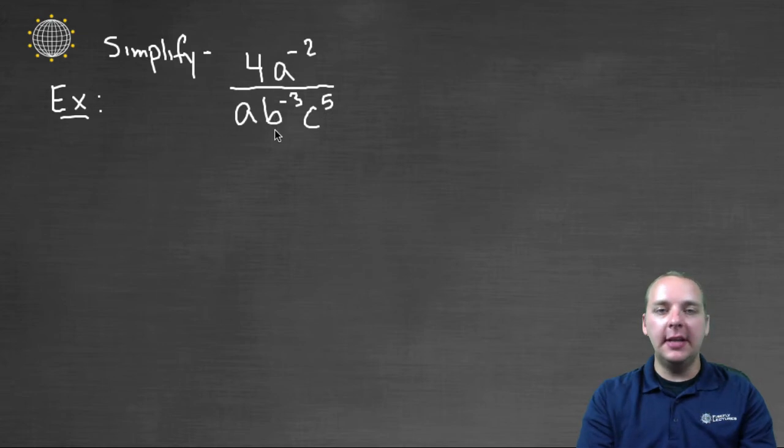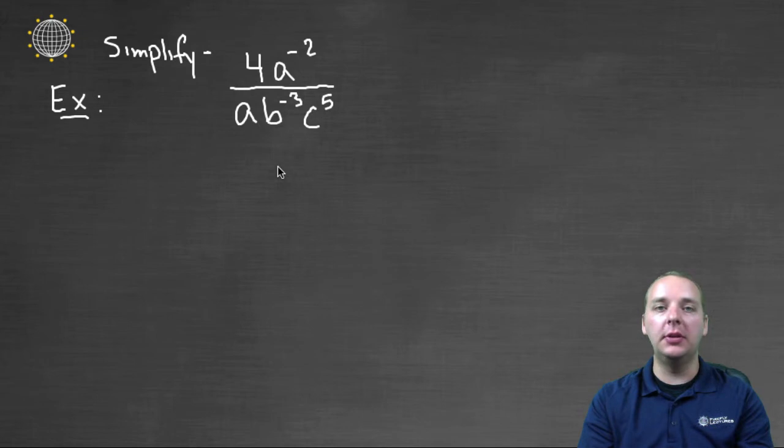Okay, so let's see how we do. Let's try an example here. The most common thing you'll be asked to do with exponents, and especially with negative exponents, is to simplify various expressions. So here's an expression with constants and a's and b's and c's, let's see how we do.